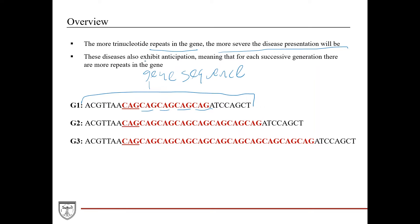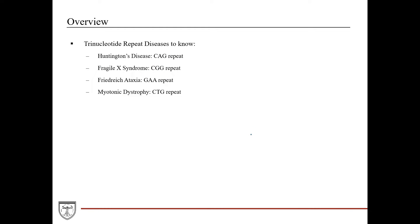These diseases also exhibit anticipation, meaning that for each successive generation there are more repeats in the gene. So in the first generation we have five, in the second generation we have even more repeats, and in the third generation even more. It gets worse with each generation, and as a result the disease presentation often gets worse with each generation.